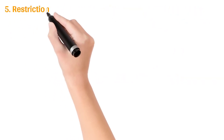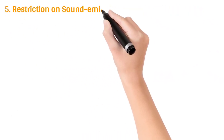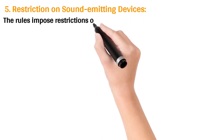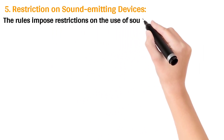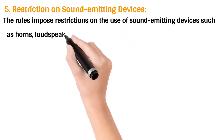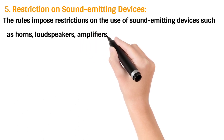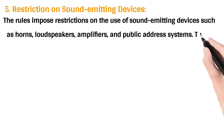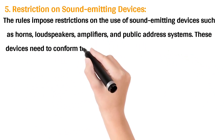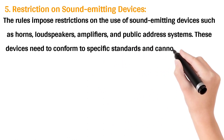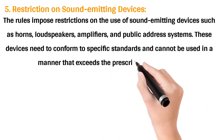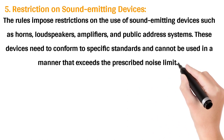5. Restriction on Sound Emitting Devices: The rules impose restrictions on the use of sound emitting devices such as horns, loudspeakers, amplifiers, and public address systems. These devices need to conform to specific standards and cannot be used in a manner that exceeds the prescribed noise limits.